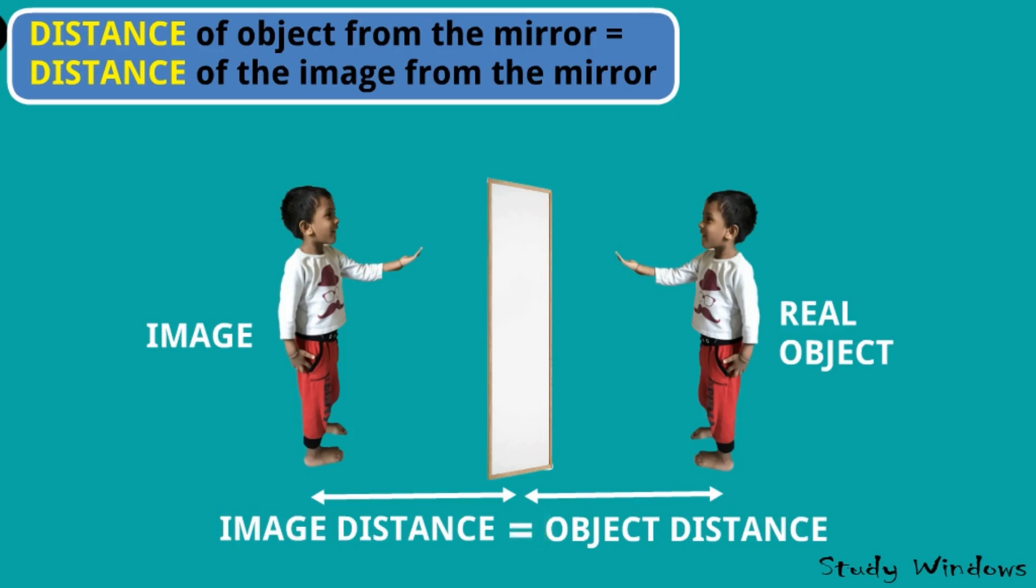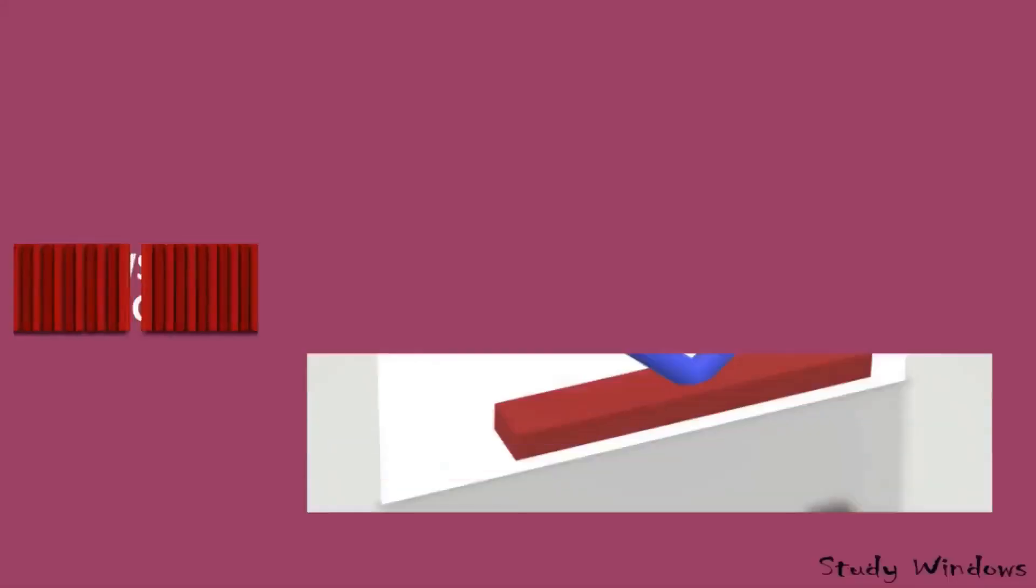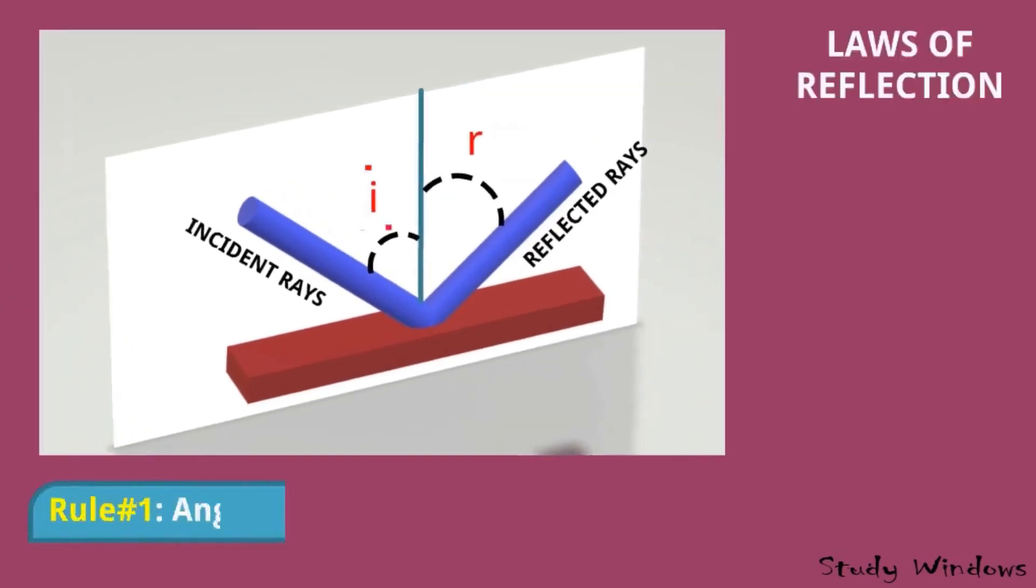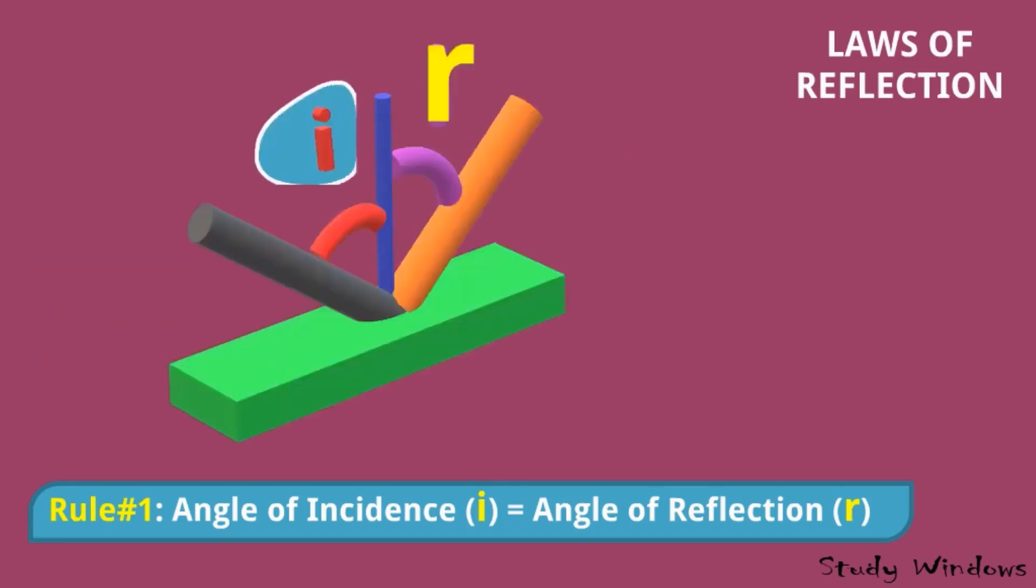Plane mirrors have laws of reflection. This is the incident ray, this is the reflected ray, and this is the normal. This is angle of incidence and this is angle of reflection. Now as per laws of reflection, first rule: angle of incidence is equal to angle of reflection. So i is equal to r.